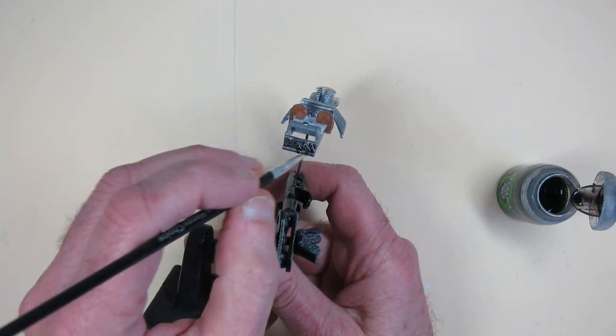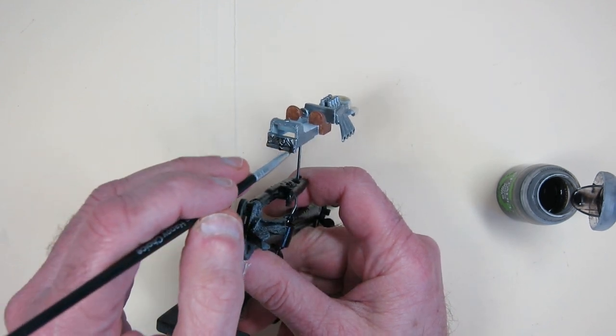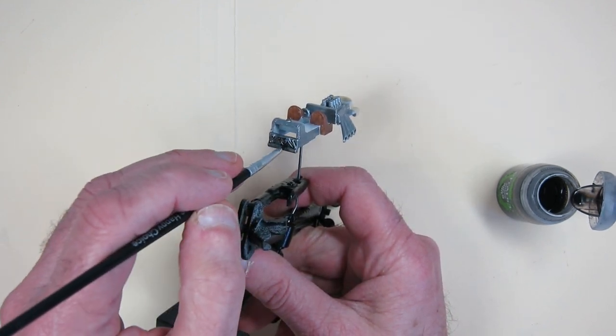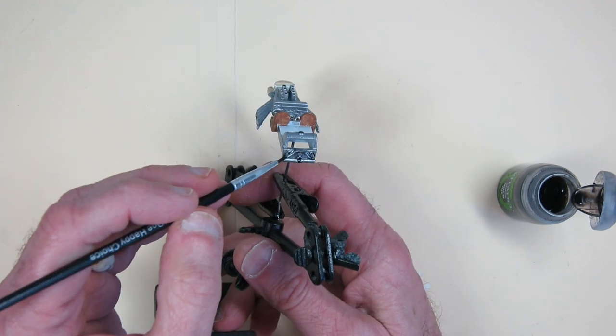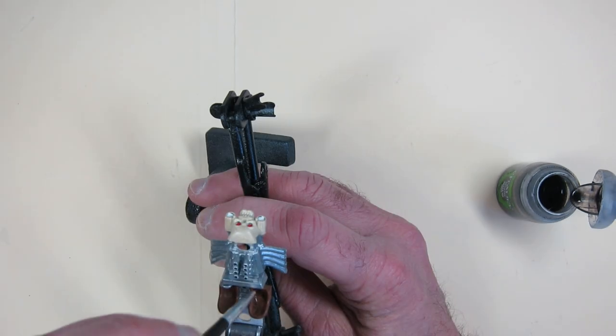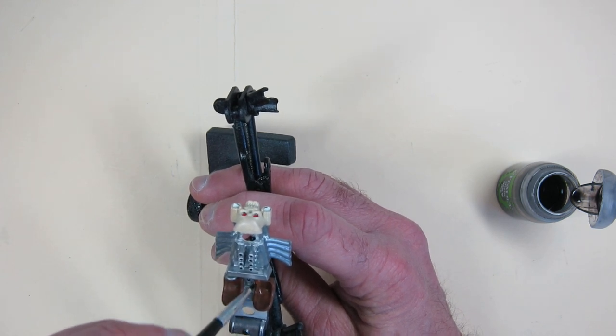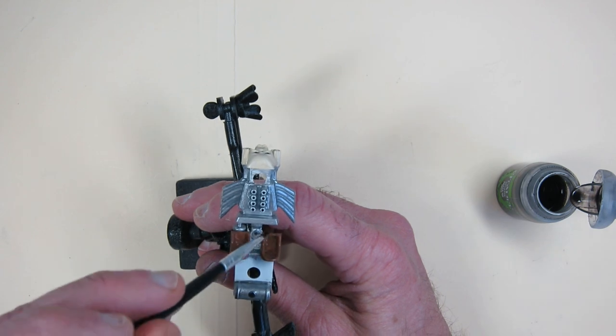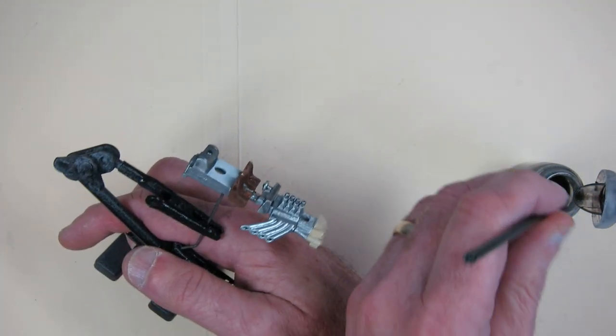And, you know, I painted the skull on the front of the bone shaker here with a combination of Citadel paints. One of them is called, and I'll try to pronounce this correctly, Ushabti Bone and Screaming Skull. That's the combination that you see there.